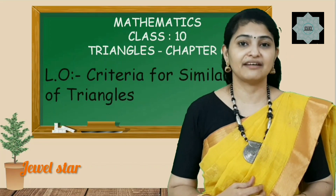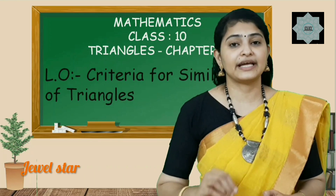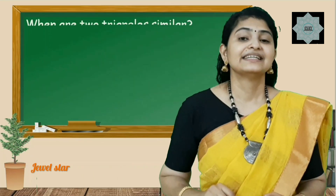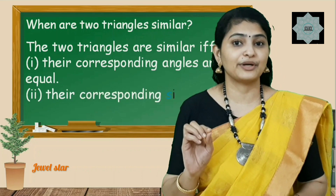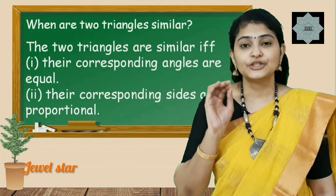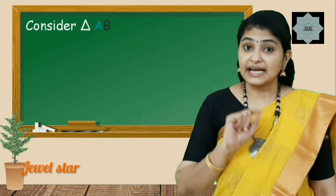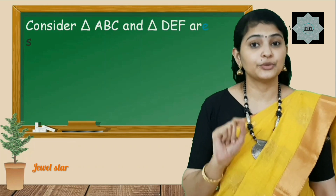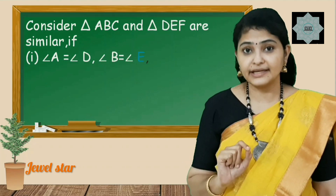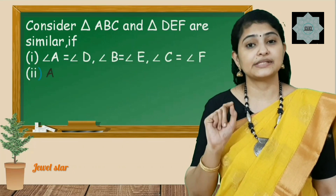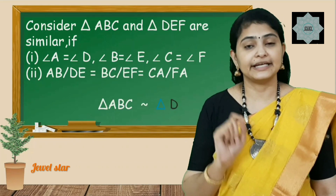Dear students, in the last session we defined similarity of triangles. Let us recall: two triangles are similar if and only if the corresponding angles are equal and the corresponding sides are proportional. In other words, triangle ABC and DEF are similar if angle A equals angle D, angle B equals angle E, angle C equals angle F, and AB/DE equals BC/EF equals CA/FA. In such a case, we write triangle ABC similar to triangle DEF.